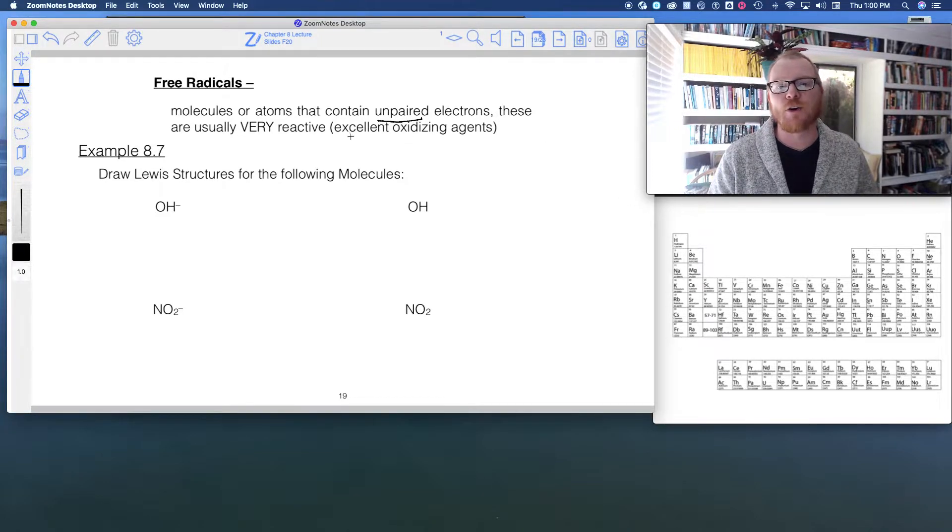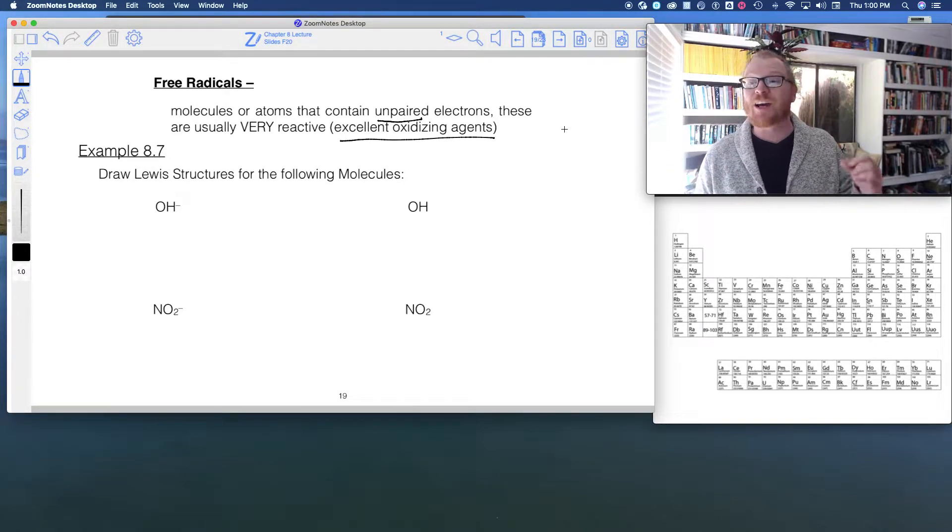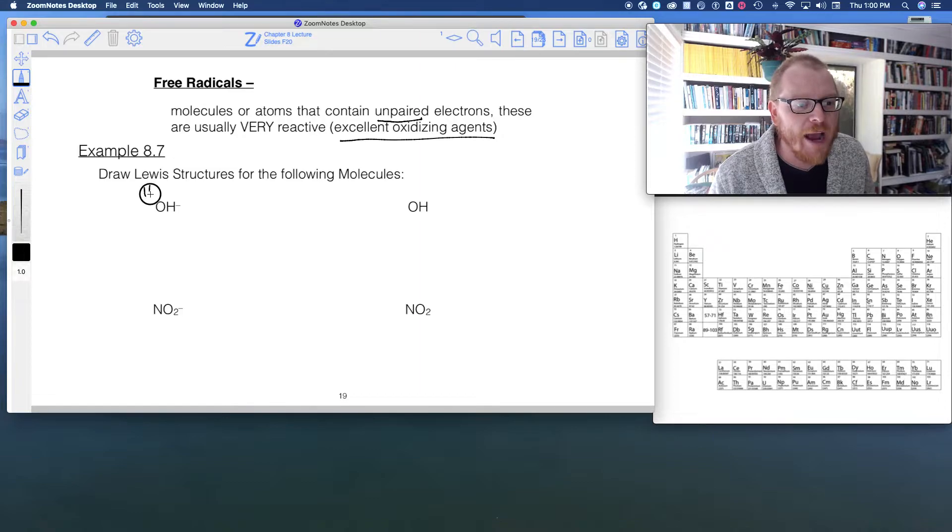Free radicals are often excellent oxidizing agents because if you recall, oxidation is a loss of electrons. So free radicals are really good at stealing electrons from other things to pair up their missing electrons. So they're very reactive. Here's two examples. So here's OH minus, so this is the hydroxide ion.